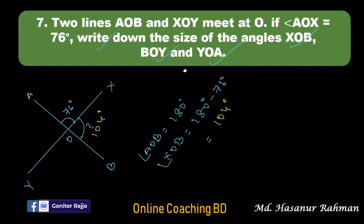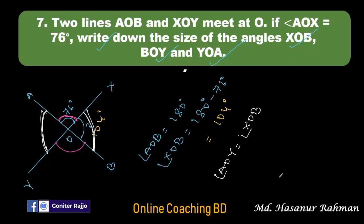There is also the concept of vertically opposite angles. AOX is vertically opposite to BOY, and XOB and AOY are vertically opposite. Vertically opposite angles are equal. So angle AOY equals angle XOB, which is 104 degrees. And angle BOY equals angle AOX, which is 76 degrees.